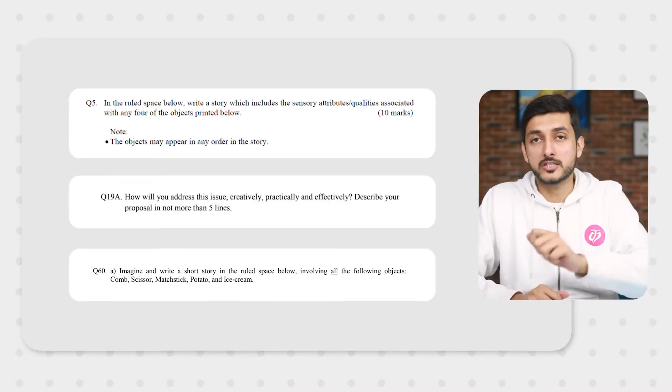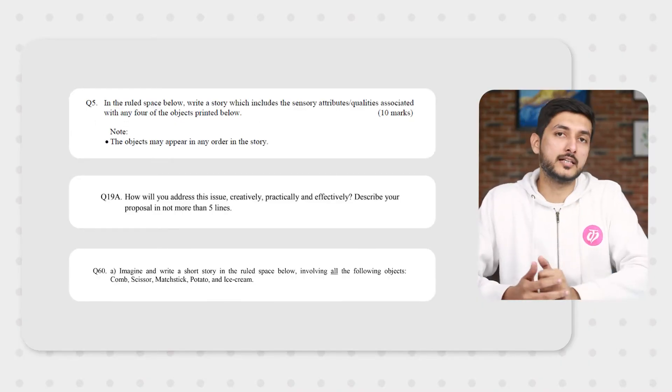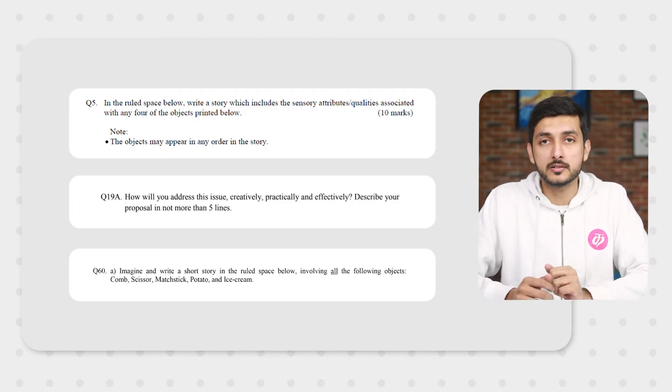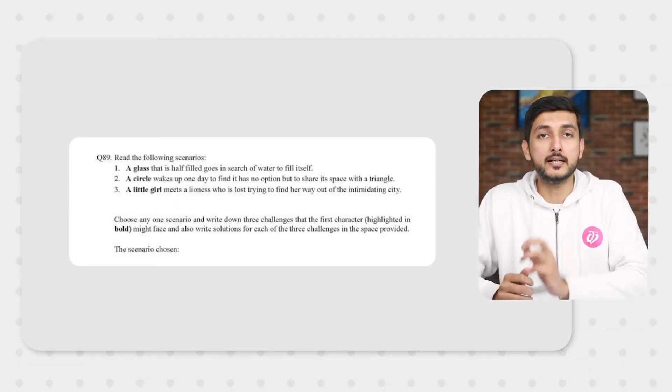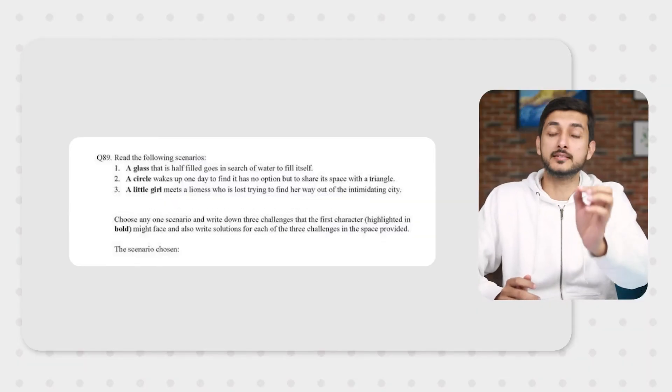Story writing questions come in a very brief format — like a story in 50 words or three sentences. Only animation or film and video streams in the masters have longer formats, and even then it is not more than 250 words.